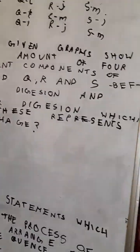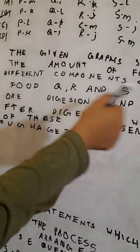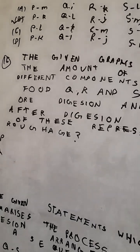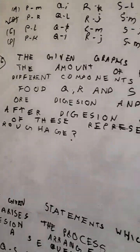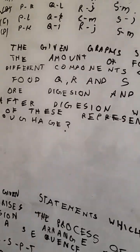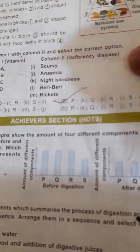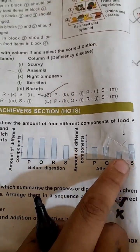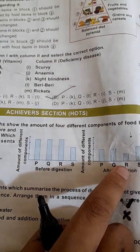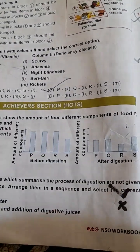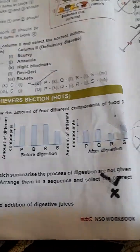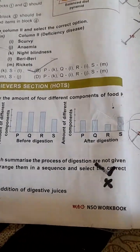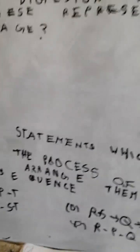The given graphs show the amount of four different components of food — Q, R and S — before and after digestion. Which of these represents roughage? S before digestion and after digestion — S represents roughage. So the correct option is option D, S.